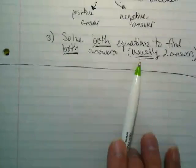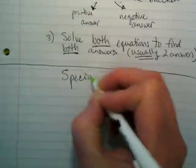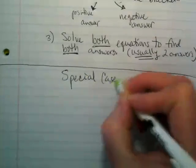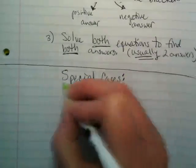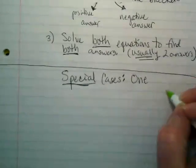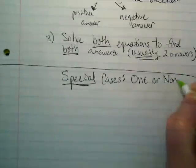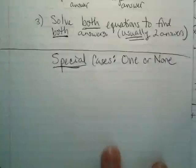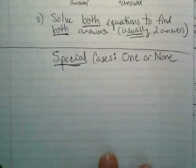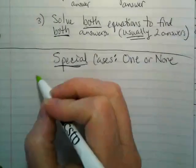But there are special cases, and that's what your book calls them, special cases. The special cases have either just one possible answer or none. One or none. So let's do a couple of examples so you can see what I'm talking about.